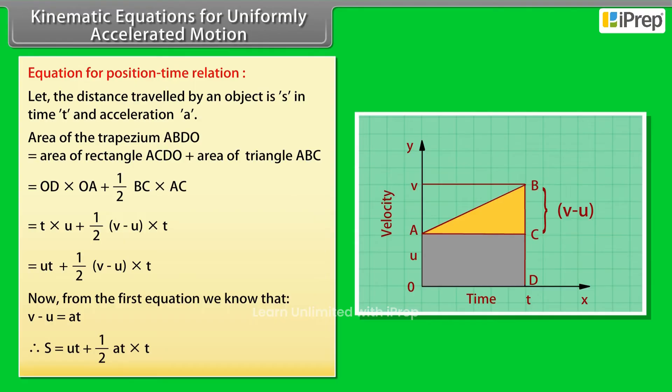Therefore, S equals UT plus one-half AT times T, which equals UT plus one-half AT squared.